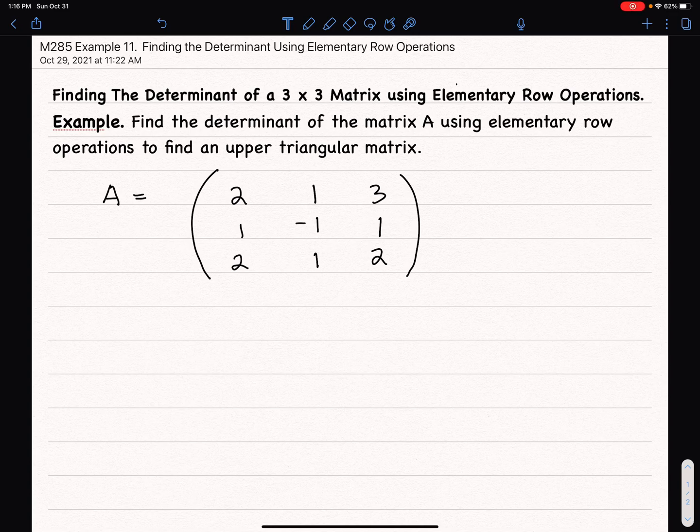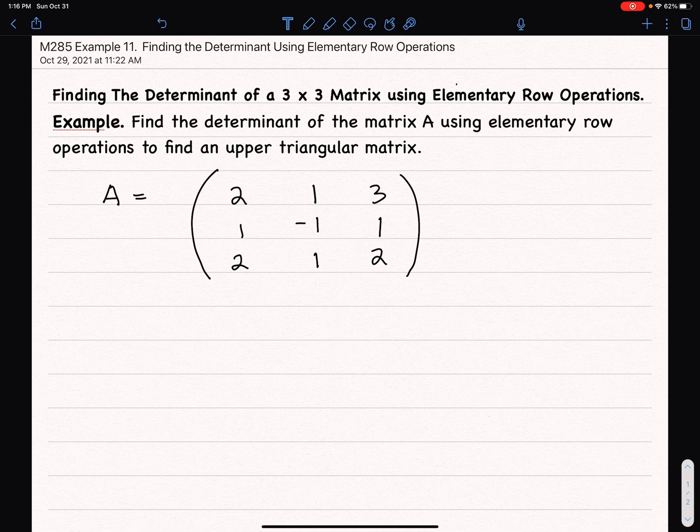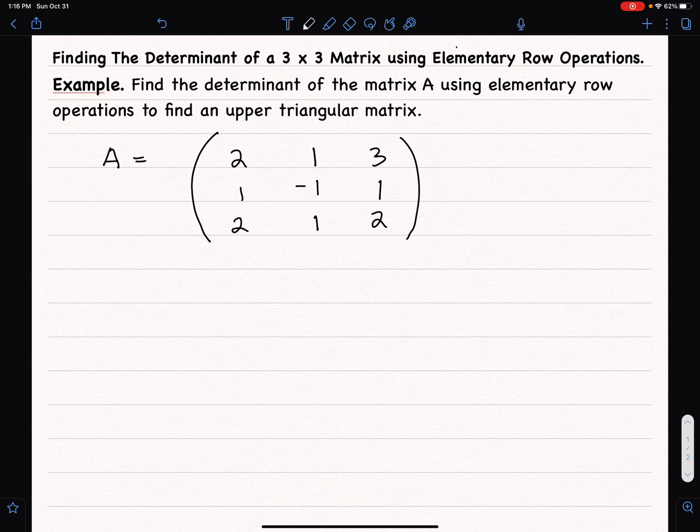Hello, in this video we find the determinant of a 3 by 3 matrix by using elementary row operations to find a matrix that will be row equivalent to A and the matrix will be in upper triangular form, which is very close to being row echelon form. Let's just jump in.